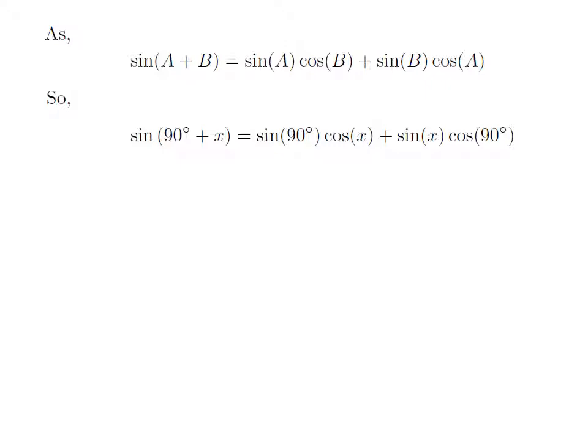So, sine of 90 degree plus x is equal to sine of 90 degree into cosine of x plus sine of x into cosine of 90 degree.